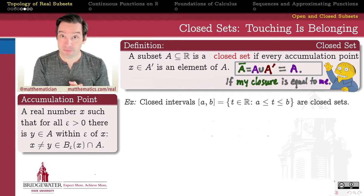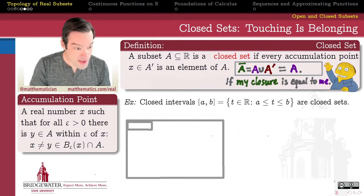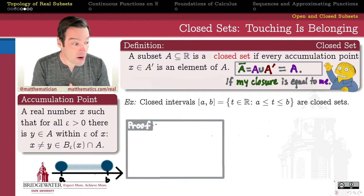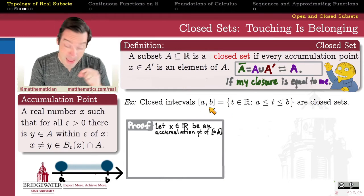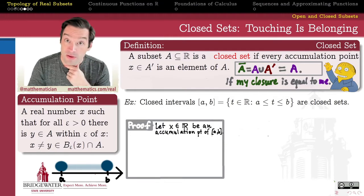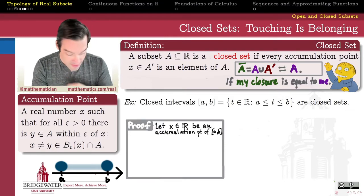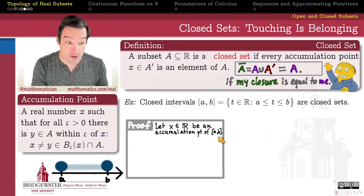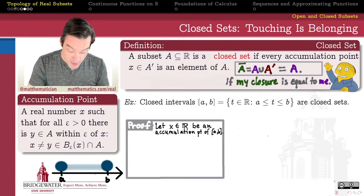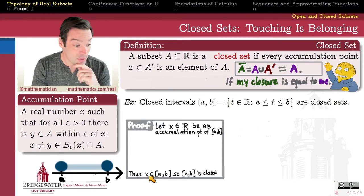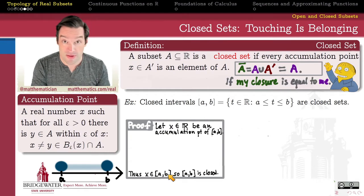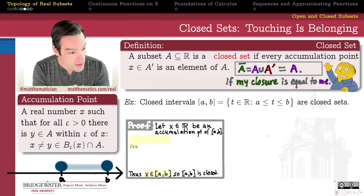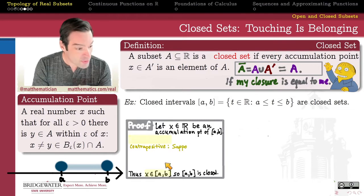Let's look at some examples. How about the closed interval from A to B? Why should we expect that closed intervals are indeed closed sets? To verify the definition, we have to figure out what the accumulation points of a closed interval are, and check that those points belong to the set itself. To prove this, let X be an accumulation point of the closed interval from A to B. Our burden of proof is to show that X must belong to [A, B].